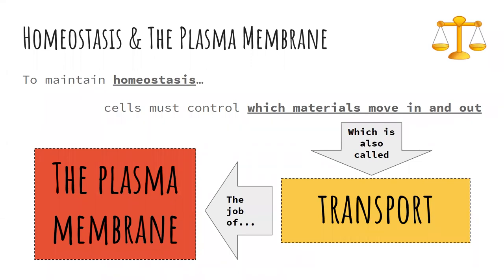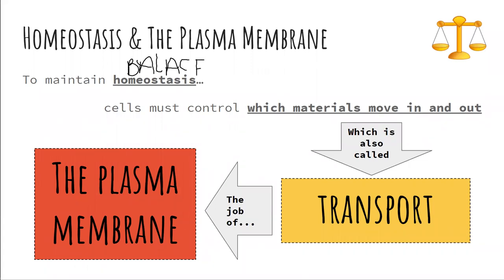So how do we actually maintain homeostasis? It actually begins with our cells, our smallest units of life. Our cells maintain homeostasis — that balance — by controlling which materials enter and leave the cell. This is also called transport. So our cells maintain balance by controlling transport.